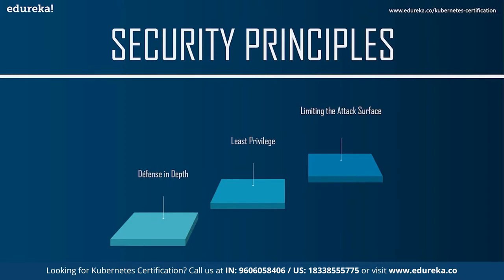A product search microservice needs read-only access to the product tables but nothing more. If that microservice is compromised or has a bug, it cannot override product information or extract user data because it has no access to that data at all. The same principle applies to humans — in some organizations only a small set of people should have access to sensitive information such as medical or financial records.